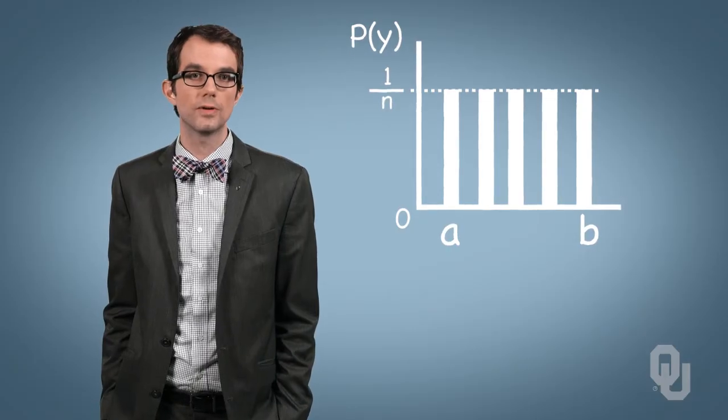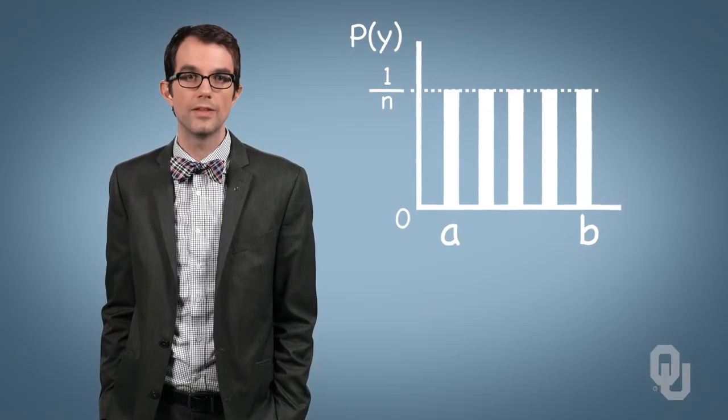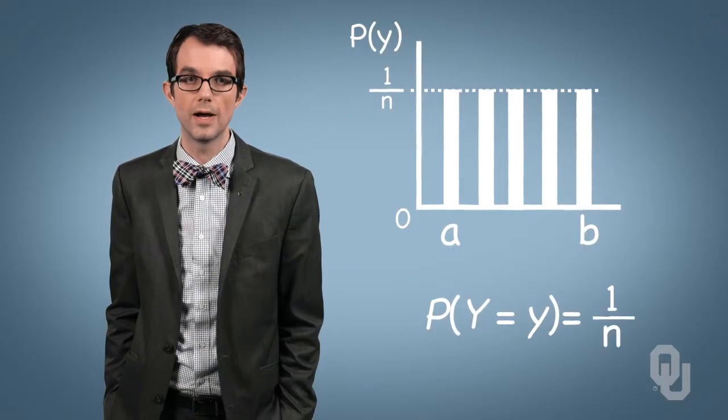Therefore, if there are n possible realizations of the random variable, then the likelihood of any realization is 1 divided by n.